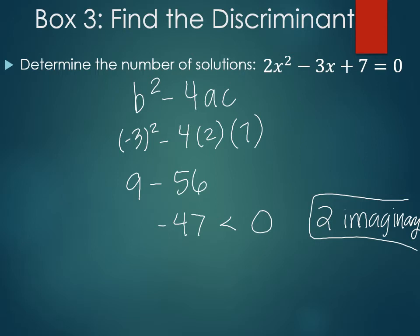We don't have to find out what the solutions are unless it tells you. Tomorrow we're going to actually work on finding these two imaginaries. You're so smart. So box 2 and box 3 are just using discriminant. Now box 4 is our real world example.